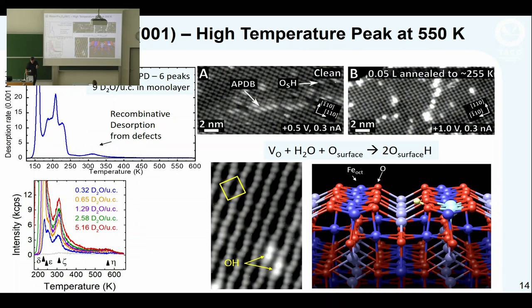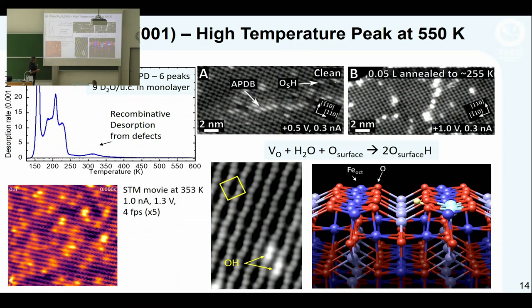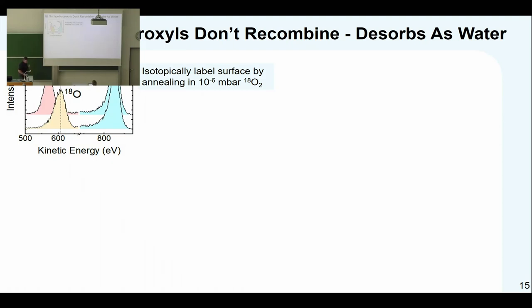At even higher temperatures we have this long tail which is desorption of water that's recombining. On our clean surface we always have surface OH groups because when we prepare the surface there are oxygen vacancies that react with water from the background. These OH groups look like two brighter iron cations because the OH affects the density of states of the two ions next to it. At 353K these OH groups bounce backwards and forwards, but at higher temperatures they can diffuse further around the surface.